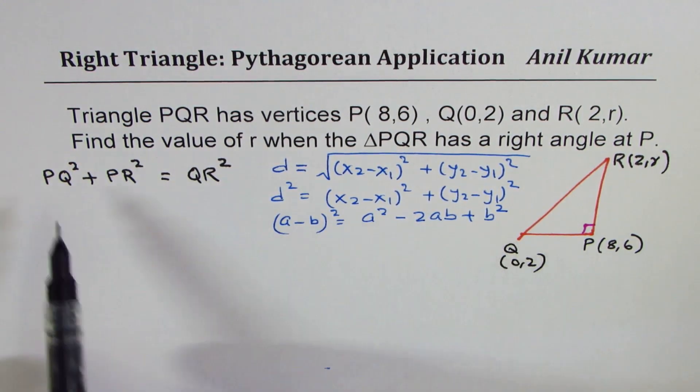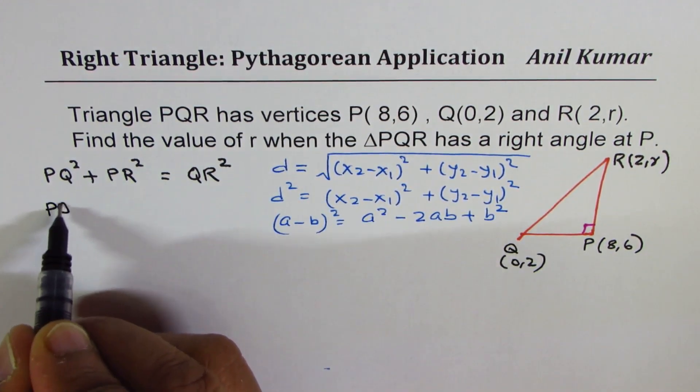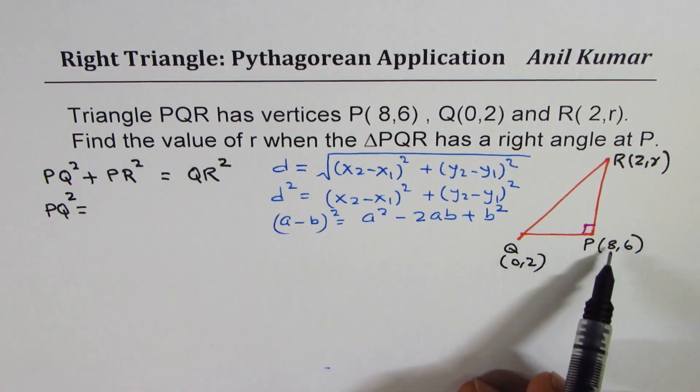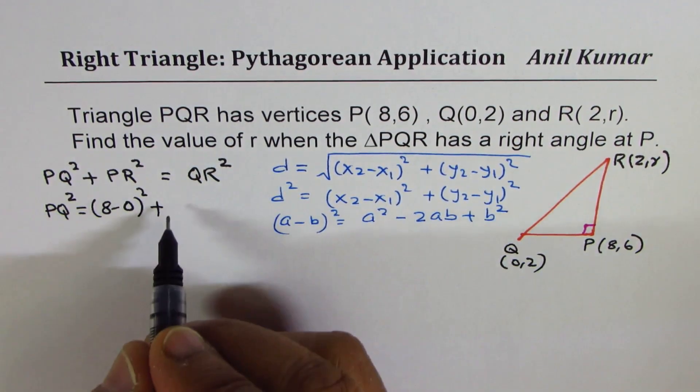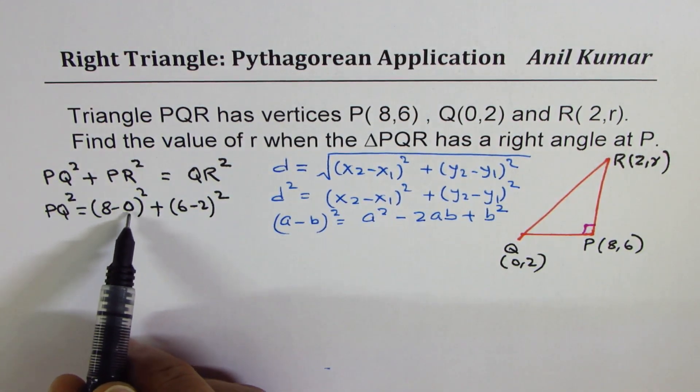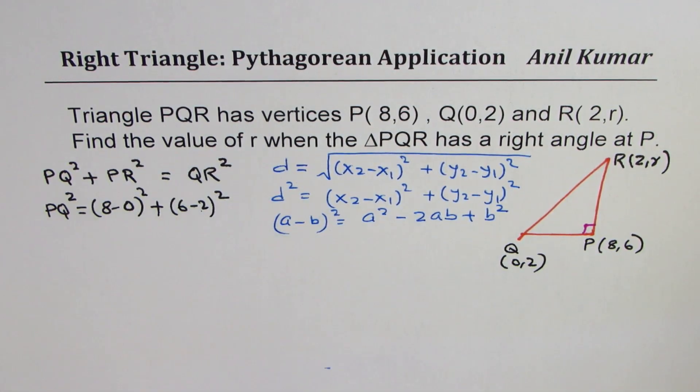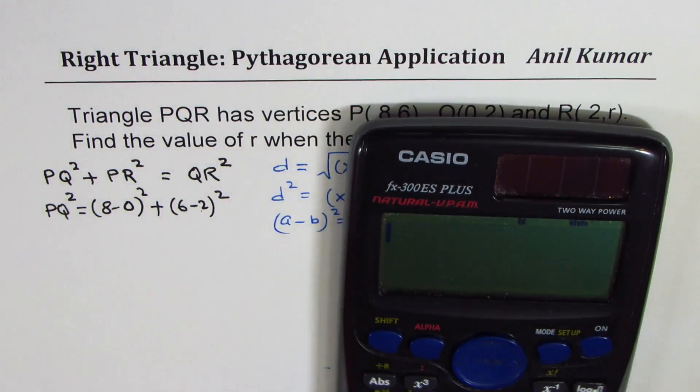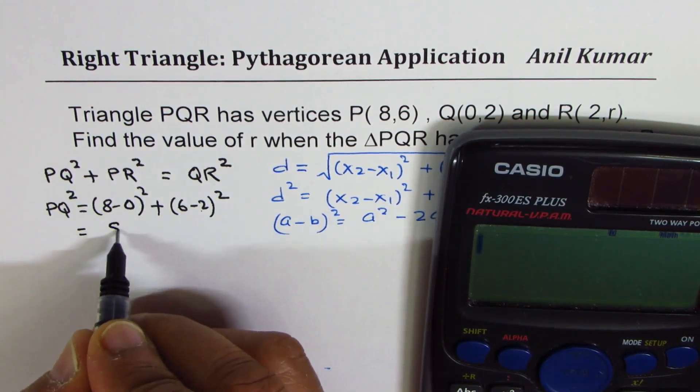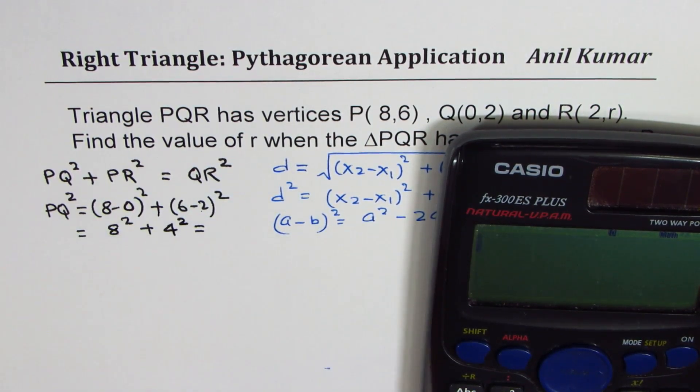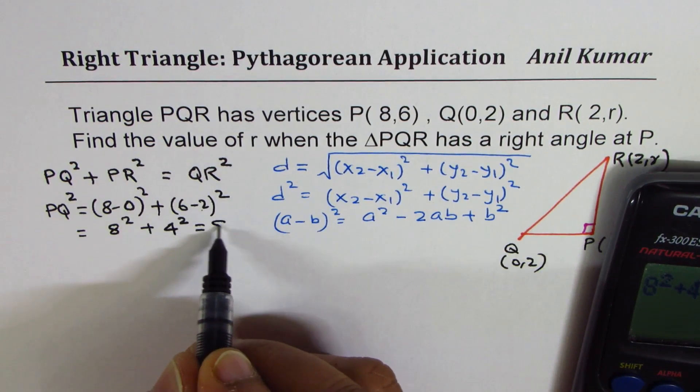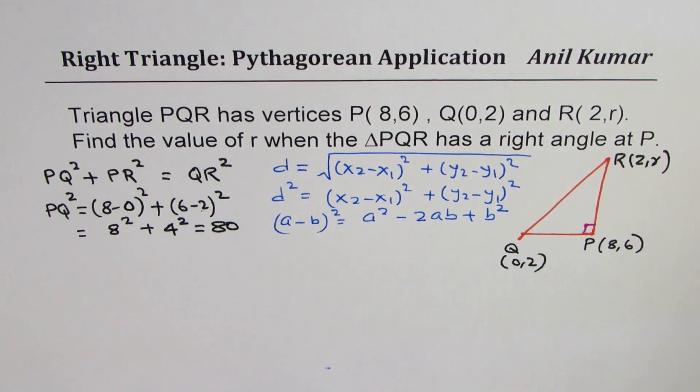Now, let's find out all these sides. So PQ square is going to be (8-0)² plus (6-2)² whole square. Now, that gives us 64, 8 square plus 4 square. So what you can do is you can use calculator. So let me rewrite this, 8² plus 6 minus 2 is 4, 4², 64 plus 16. So let's do 8² + 4² equals to 80. So we get the length square of PQ.